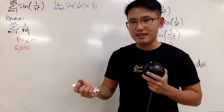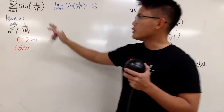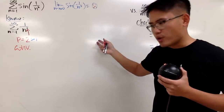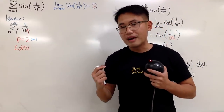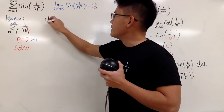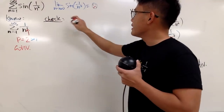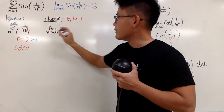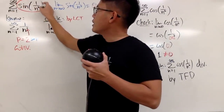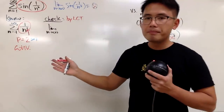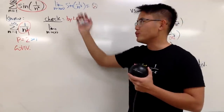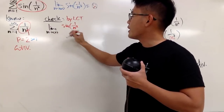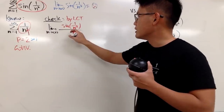We have two forms of the comparison test. One is the direct comparison test, but I don't want to deal with sine of 1 over n and an inequality with 1 over n squared. So we will use the limit comparison test instead. The idea is to check by taking the limit as n goes to infinity. You put a_n on top — which is sine of 1 over n squared — divided by b_n, the one you know, which is 1 over n squared.